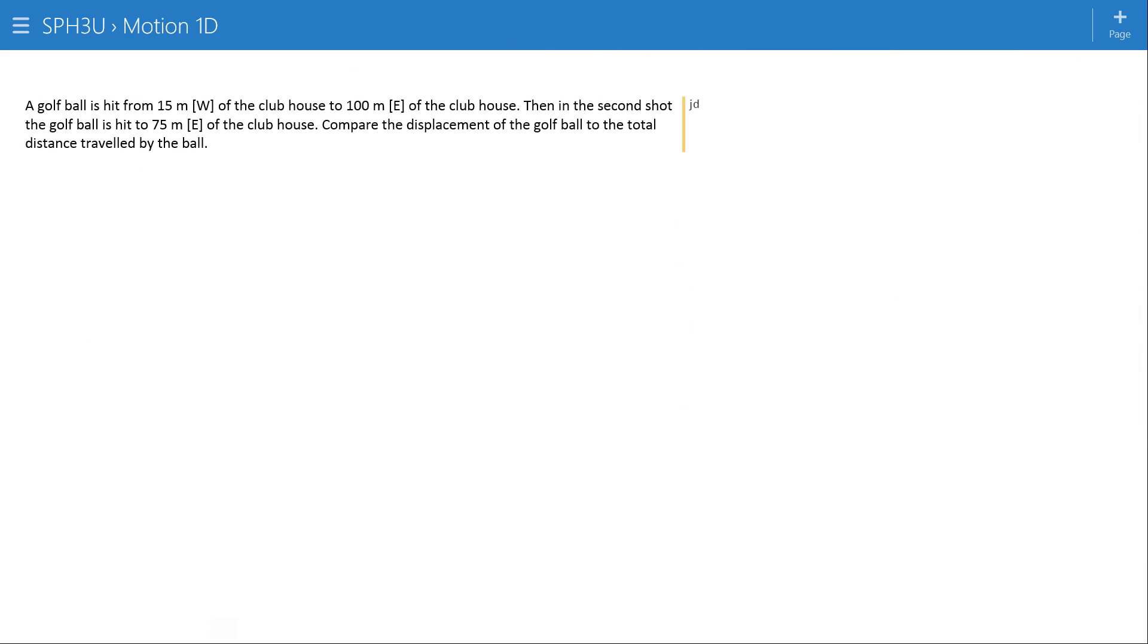Here's a little problem that's designed to illustrate the difference between these two things. A golf ball is hit from 15 meters west of the clubhouse to 100 meters east of the clubhouse. Then in the second shot 75 meters east of the clubhouse. So these are positions. So D1 here would be 15 meters west. D2 would be 100 meters east. And D3 goes back to 75 meters east.